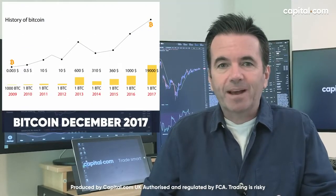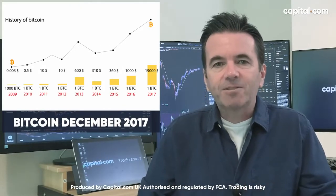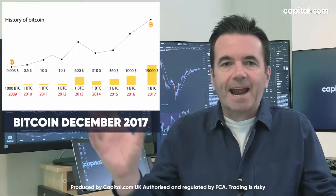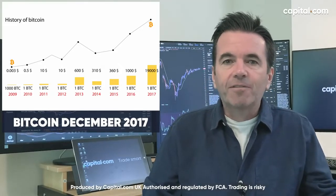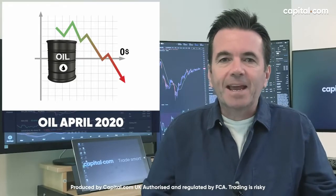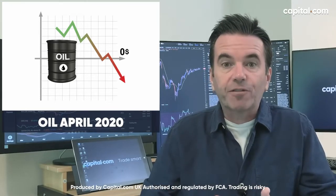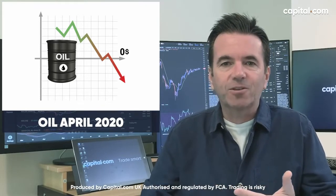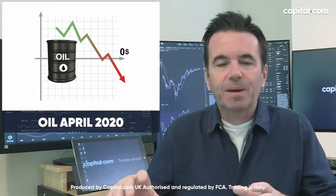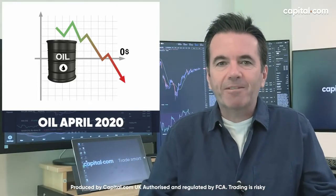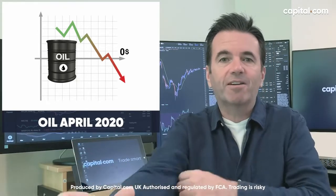A couple of high-profile examples come to mind. Bitcoin is a really obvious one — late 2017, after that fantastic rise in the last quarter, plenty of people thought the price would carry on going to the moon. And of course in 2018, the price crashed. A more recent example is oil from back in April. When the futures front-month May contract for West Texas oil went negative — trading at nearly minus $40 a barrel — looking at the sentiment analysis on the platform, nearly everybody was bearish on oil. Sentiment had reached an extreme. And since then, we've seen a really strong recovery in oil.